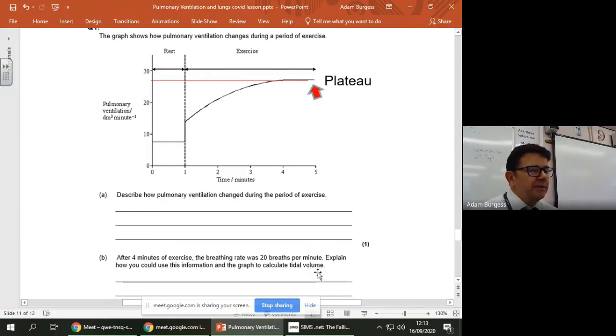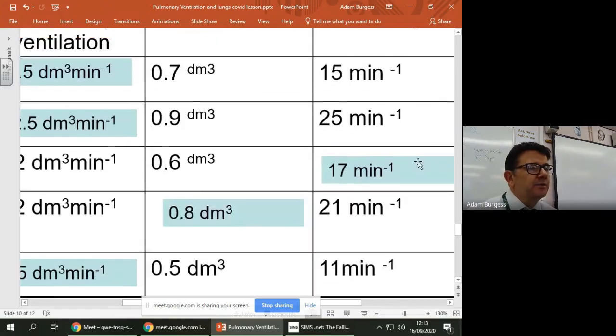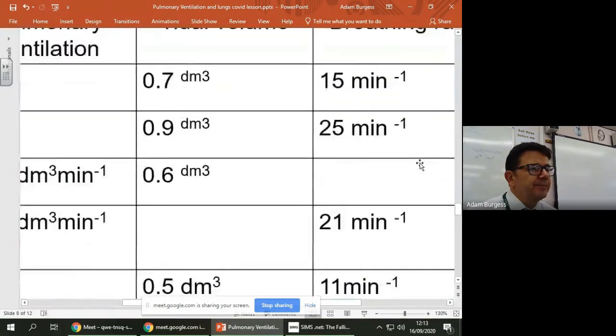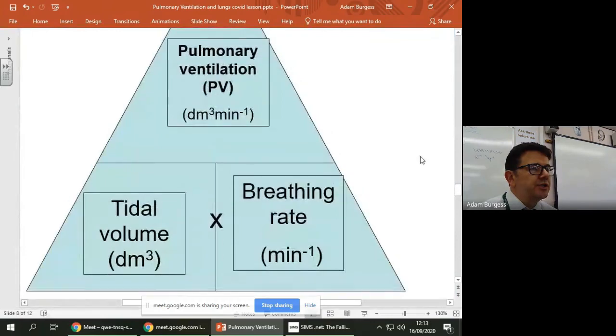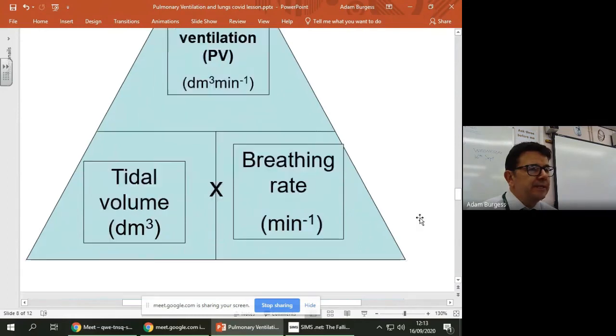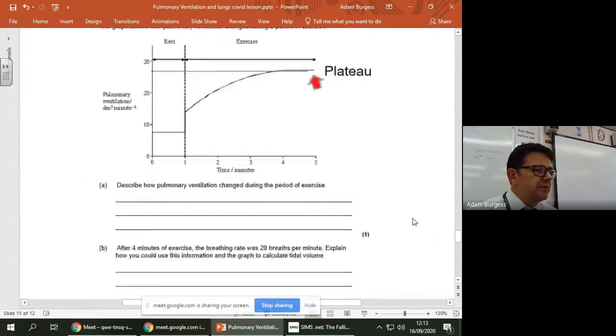And we know the breathing rate. So to work out the tidal volume, we go back to the magic triangle. There we go. So I need to work out tidal volume, so it would be PV divided by breathing rate.